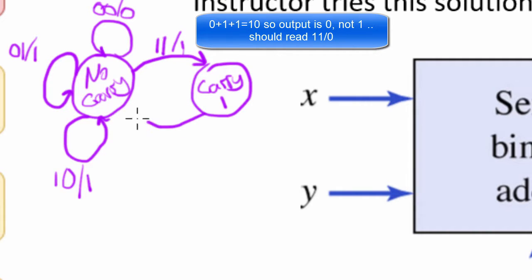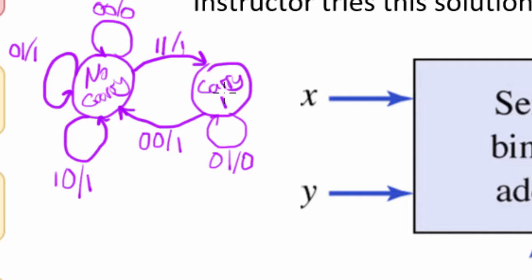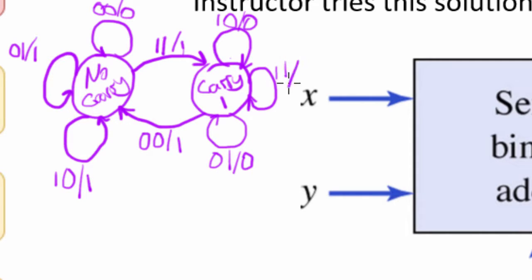Now from the carry state, if it gets 0,0 it's going to output a 1 because of the carry, and go back to no carry. If it gets 0,1 it stays in carry and outputs a 0 because 1+1=10, and the 0 part of 10 is the output while the carry keeps it there. Same thing is true for 1,0 — it outputs a 0 and stays in carry. If we get 1,1: 1+1+1=11, so it outputs a 1 and stays in carry.